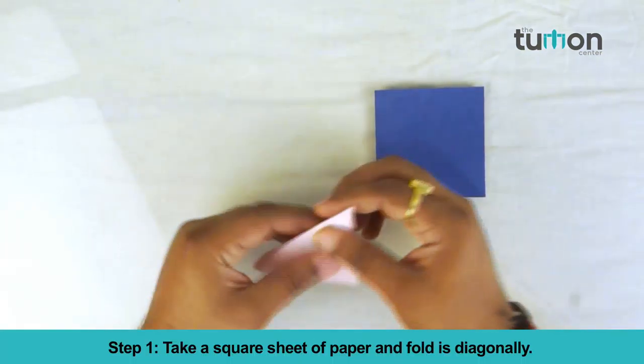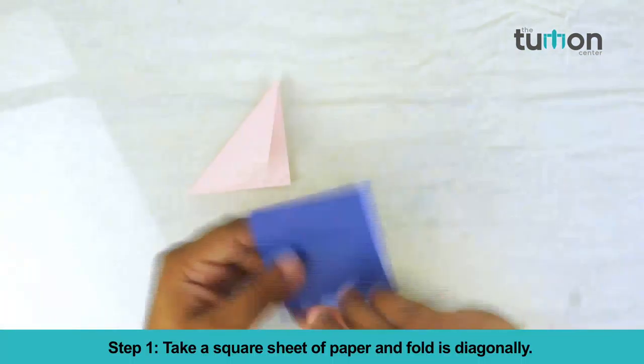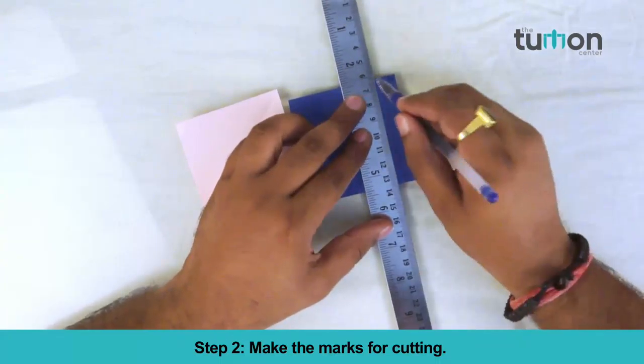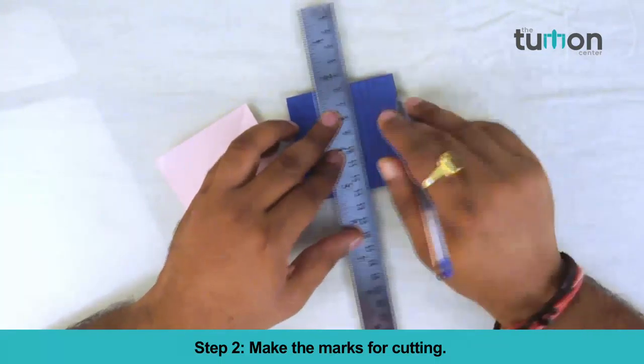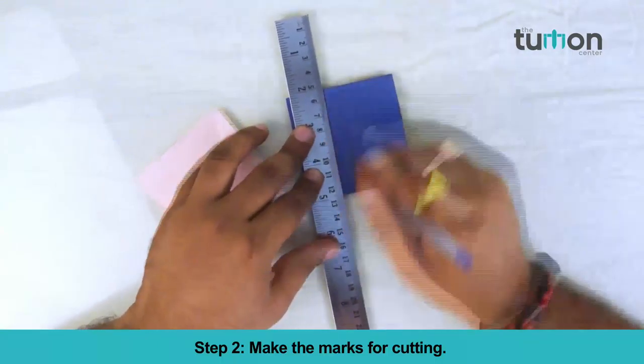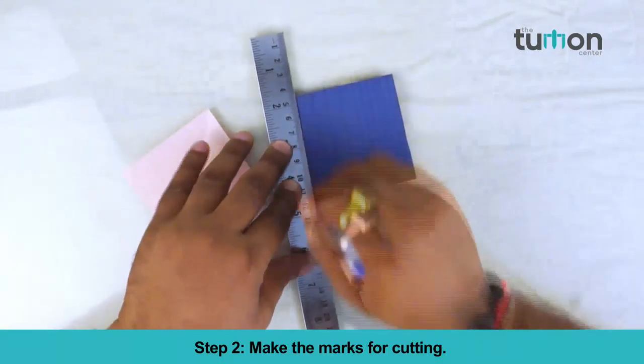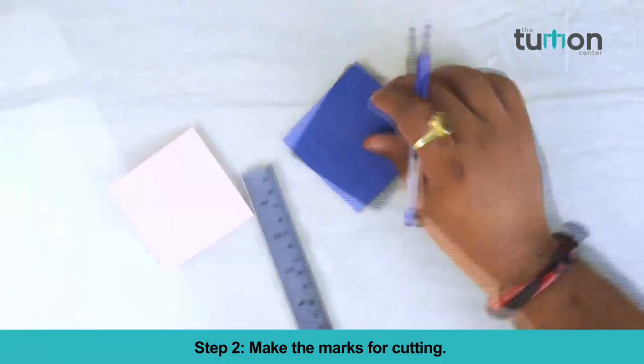Take a square sheet of paper and fold it diagonally. Make the marks for cutting.